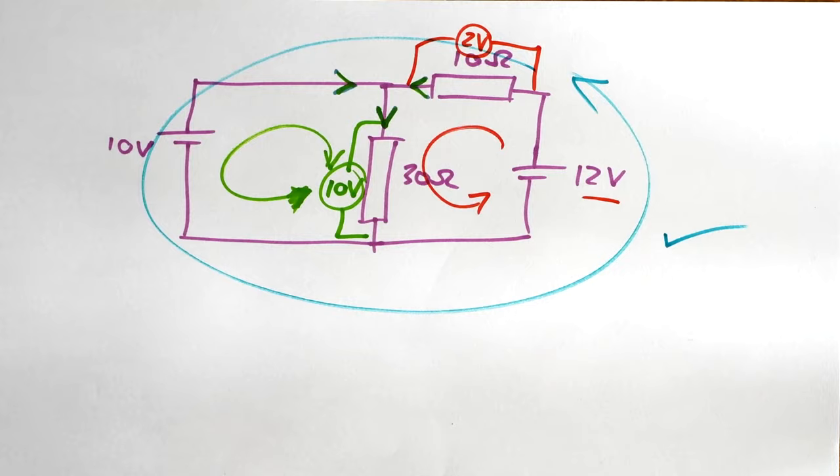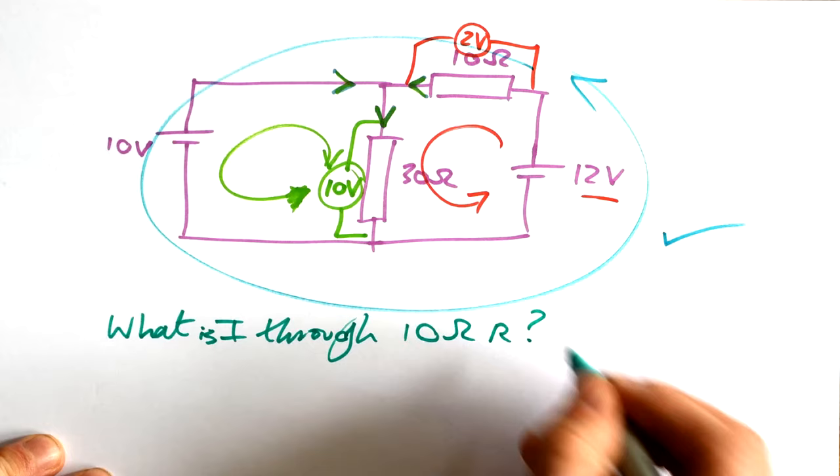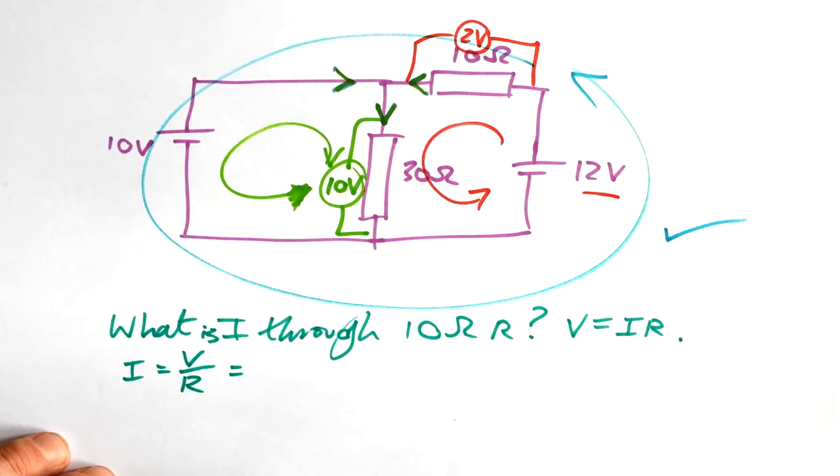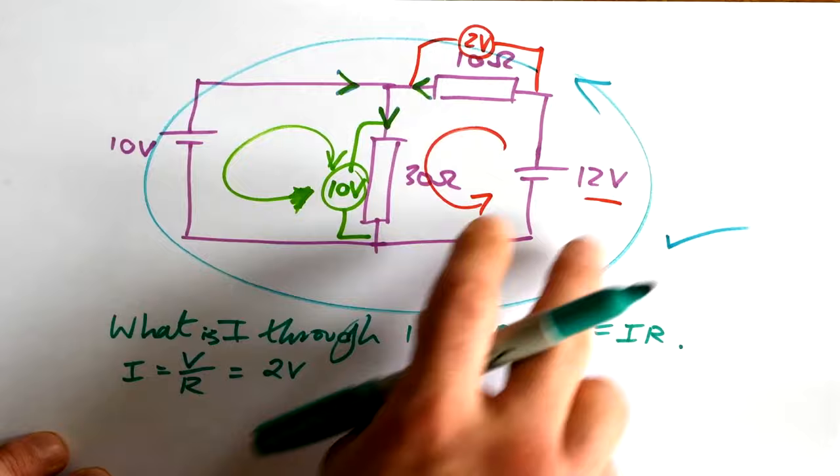You could then get asked a question like what is the current for the 10 ohm resistor? Well, we're going to use just V equals IR. I is V over R. But what is the V going to be? Like we said, it's 2 volts. And we could figure that out either from these two loops or just the big loop. Divide that by the 10 ohms and we have 0.2 amps.